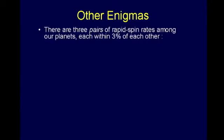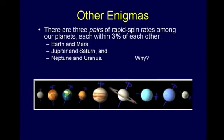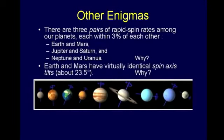There are some other enigmas. As we examine the planets carefully, we discover something weird: they are in pairs. There are three pairs of rapid spin rates among our planets, each within 3% of each other. Earth and Mars have the same spin rates. Jupiter and Saturn have roughly the same spin rates. Neptune and Uranus have the same spin rates. Earth and Mars also have virtually identical spin axis tilts — both have about a 23.5 degree tilt. Someone investigating with an open mind can't help but wonder why.